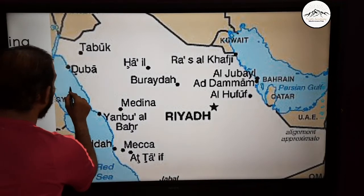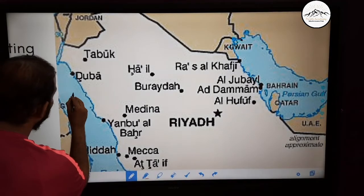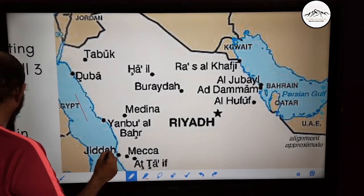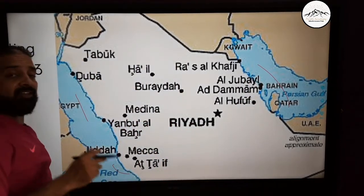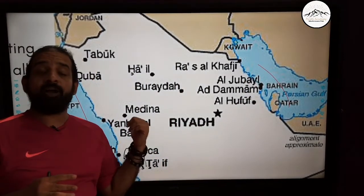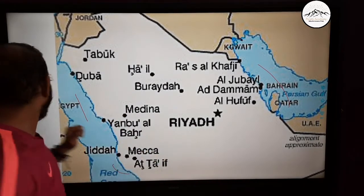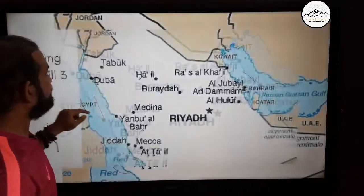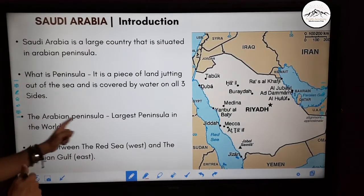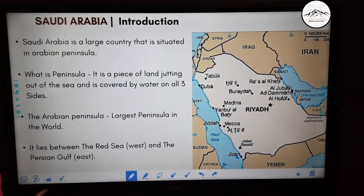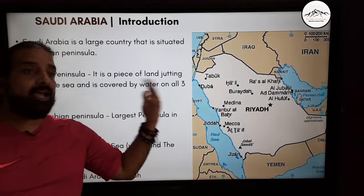On this side, this side, the south side, as well as the east side — this is called a peninsula, and Saudi Arabia is the largest peninsula in the world. It lies between the Red Sea in the west and the Persian Gulf in the east.